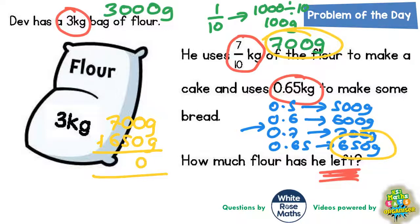Zero plus zero is zero, zero plus five is five, and seven plus six is thirteen. So he's used 1,350g.